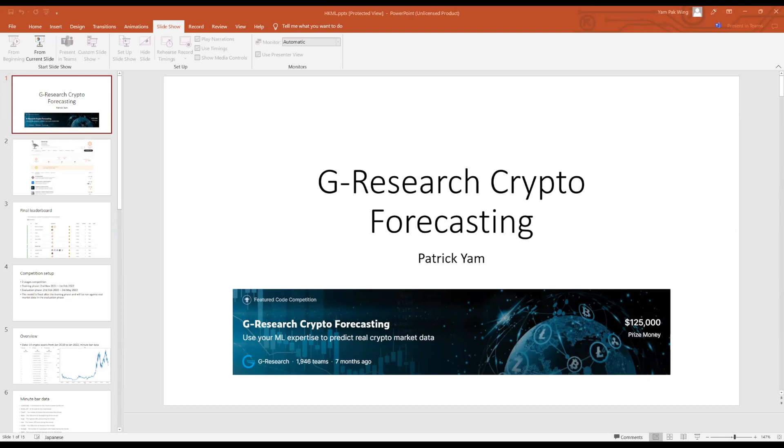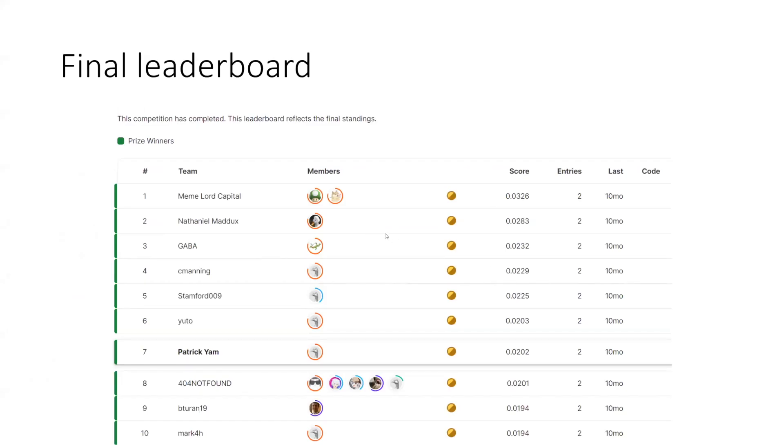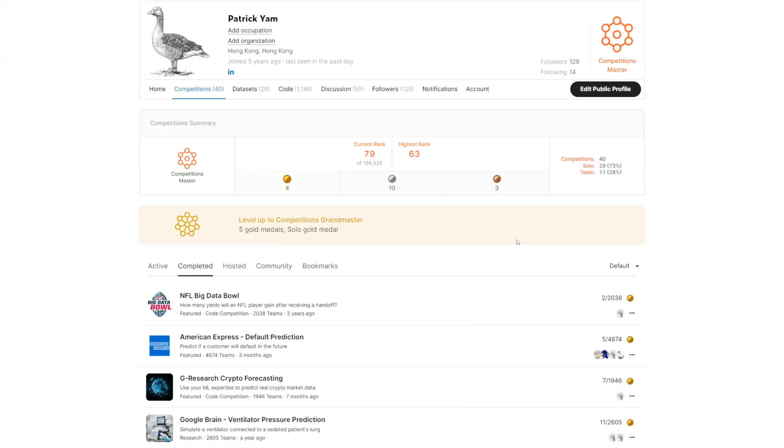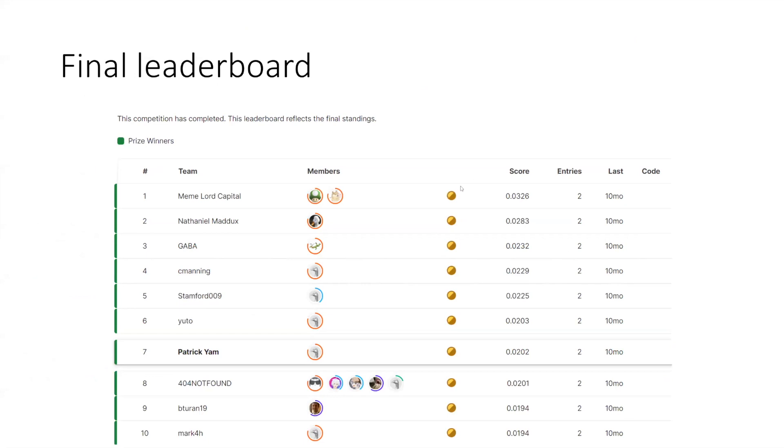This is the final leaderboard of the G Research crypto forecasting competition. I got seventh place in the private leaderboard and my solution is a deep learning model. I'll go into the details here. This is the final leaderboard of the competition, so I got seventh place here and my solution is a deep learning model with very little feature engineering.